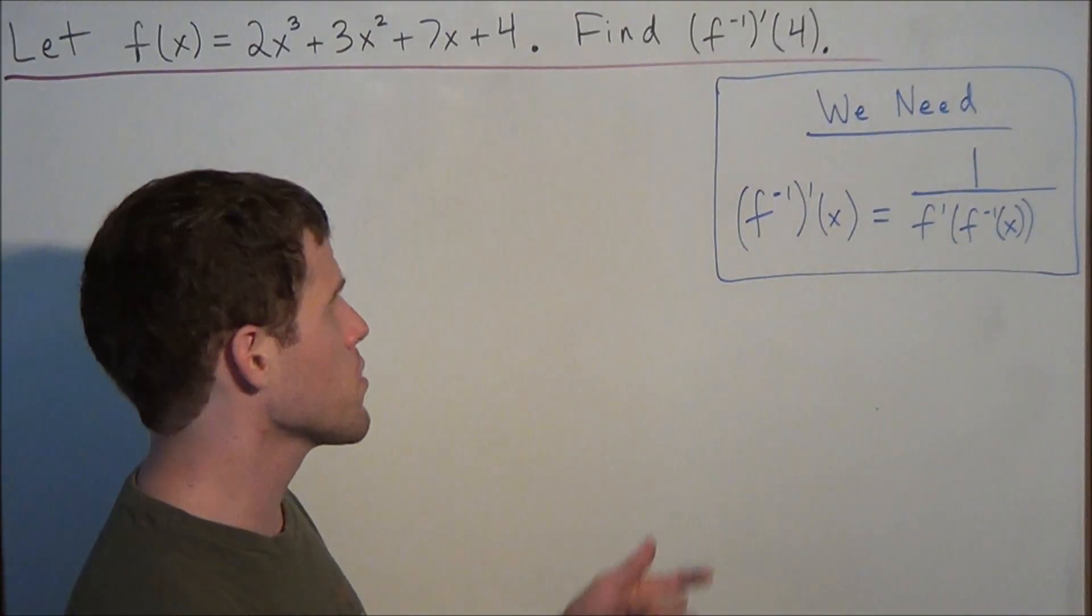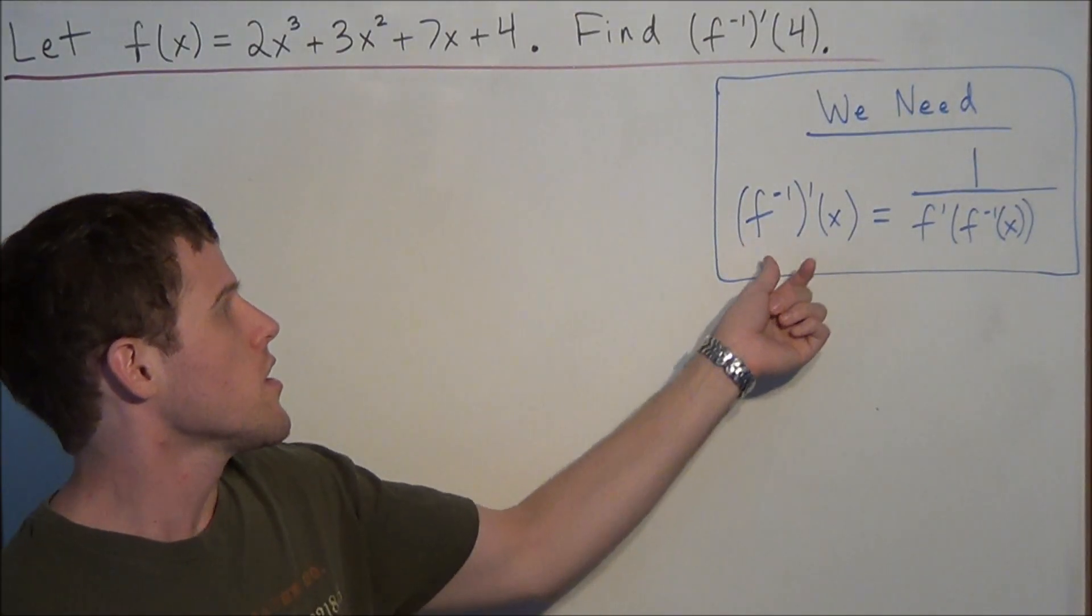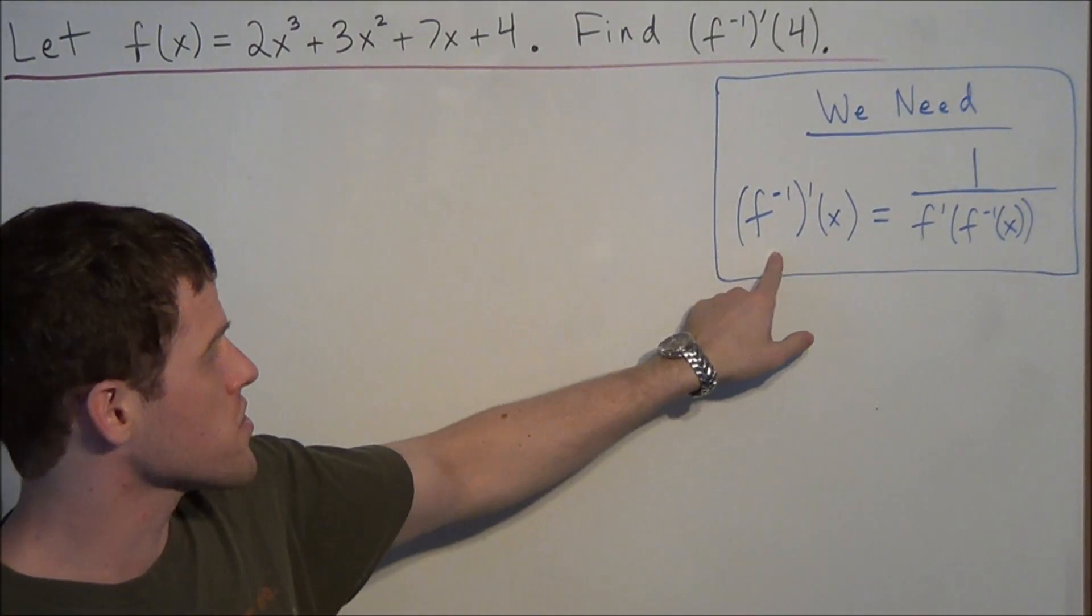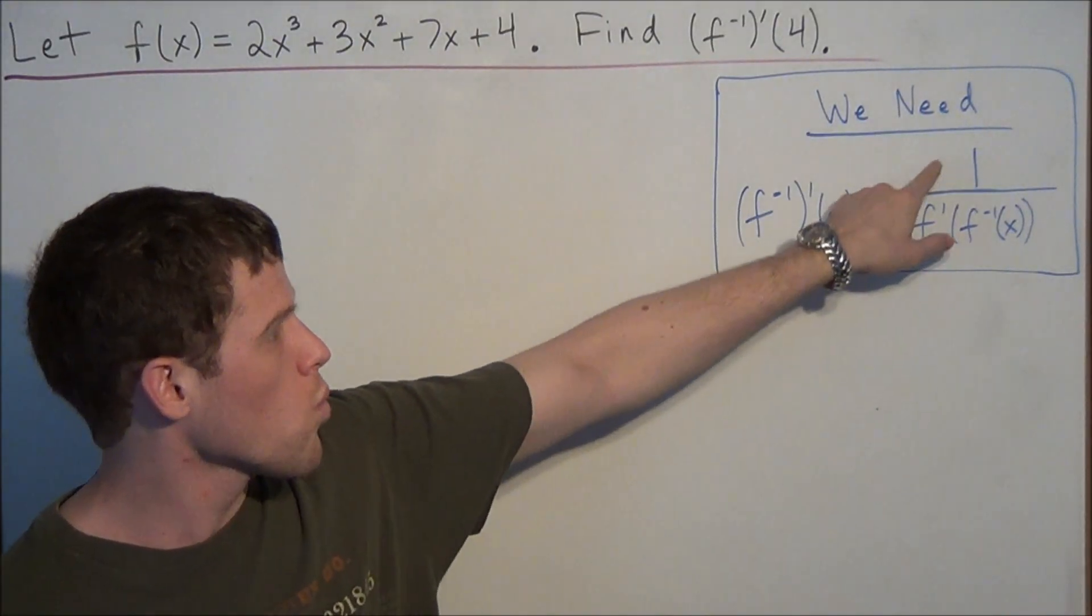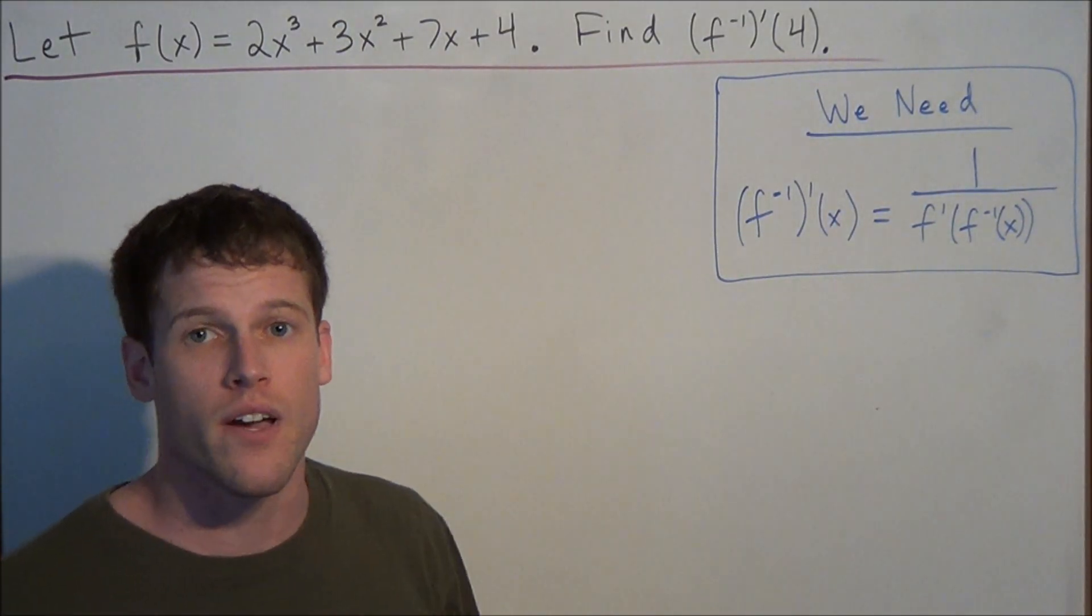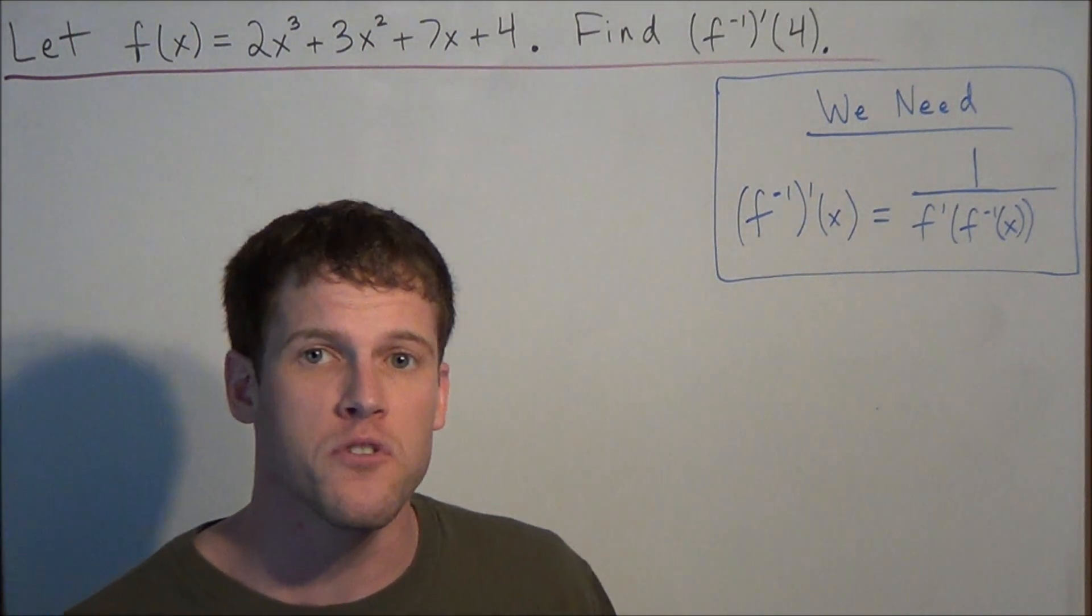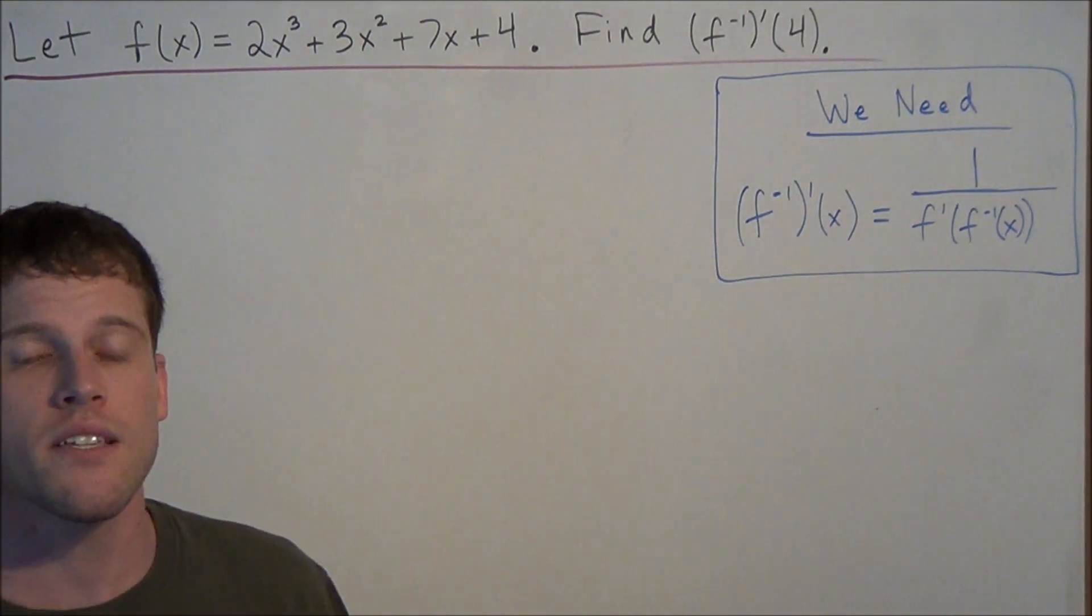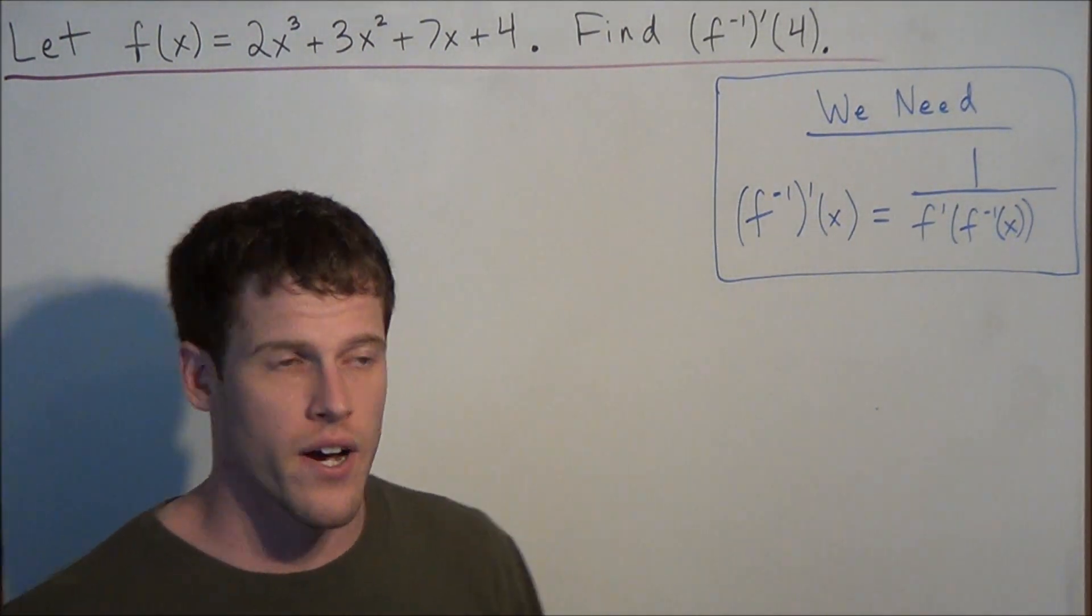For this example we want to make use of the equation: the derivative of f inverse at x equals 1 over f prime at f inverse of x. Now that equation can be confusing at first glance, so we just have to think about what components we need to find.